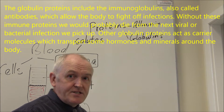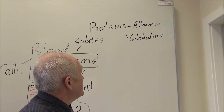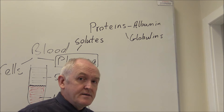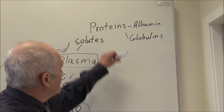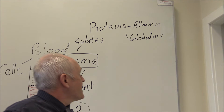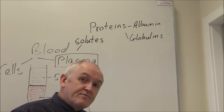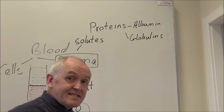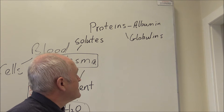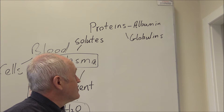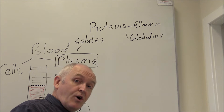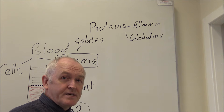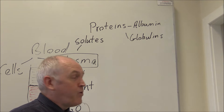Albumin helps to prevent edema - if someone doesn't have enough albumin they can become edematous. Then there are globulins, proteins which are globular in nature. Some globulins are made in the liver, but other components - the immunoglobulins - are actually made by the white cells, the lymphocytes, because the immunoglobulin component of the globulins are the immune proteins giving the body specific acquired immunity.